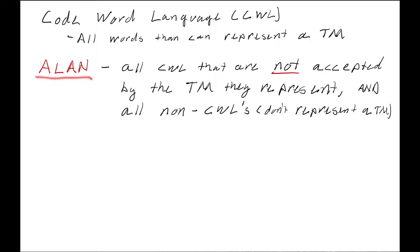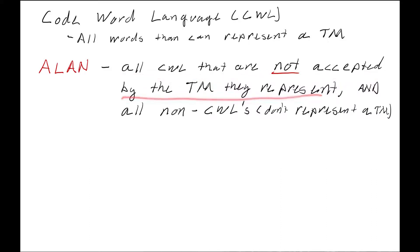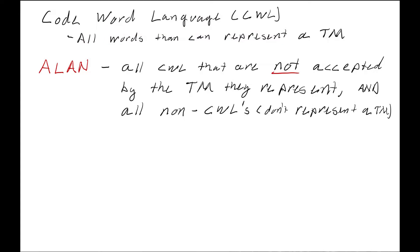Allen is all codewords that are not accepted by the Turing machine they represent, and all non-codewords. In other words, it includes all words that don't represent a Turing machine because they don't follow the right format, or there's an edge that exits a halt state, or anything like that — anything that just doesn't code up a real Turing machine. That is in the language Allen. And if it does code up a real Turing machine, when we put that codeword on the Turing machine, the Turing machine will not accept it.